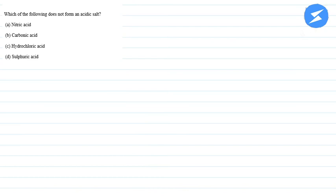Hello everyone, I'm your teacher for this question. Now let me explain the question to you. The question says which of the following does not form acidic salt? Option A is nitric acid, B carbonic acid, C hydrochloric acid, D sulfuric acid. So we will tell you which acidic salt will not be made.